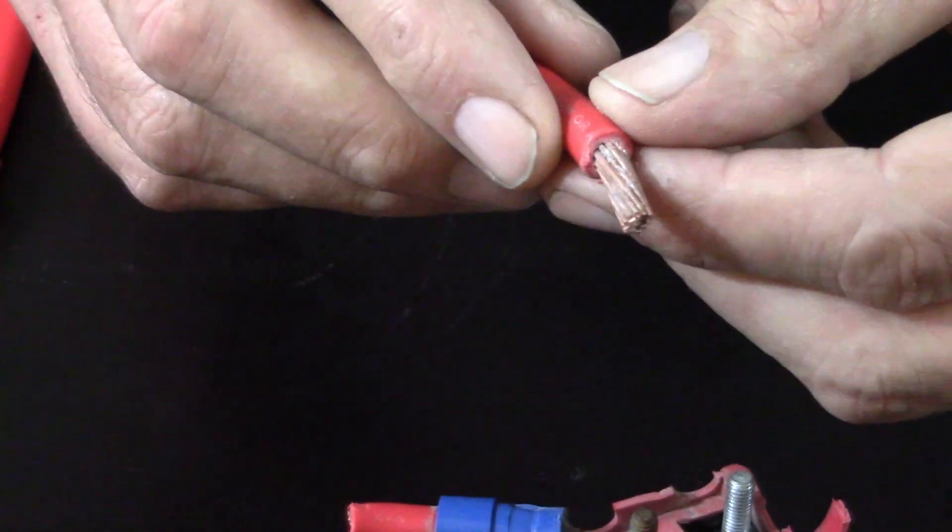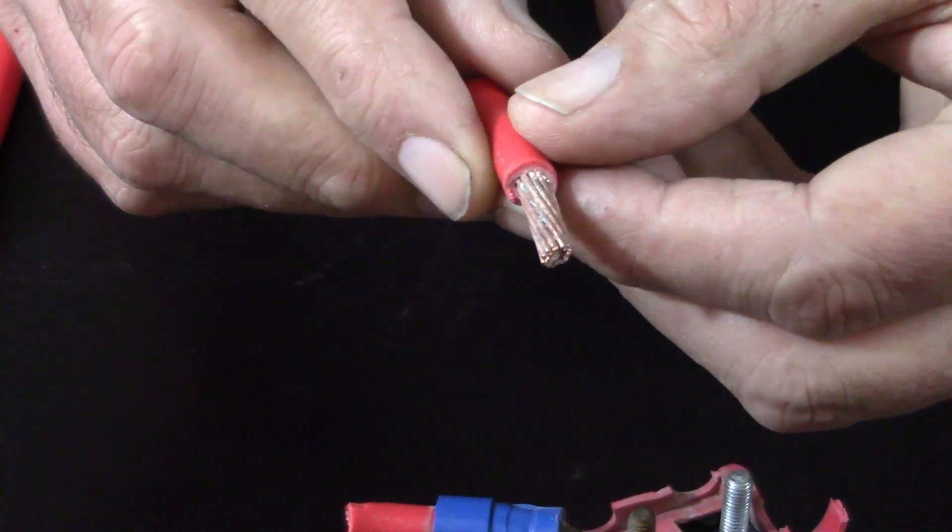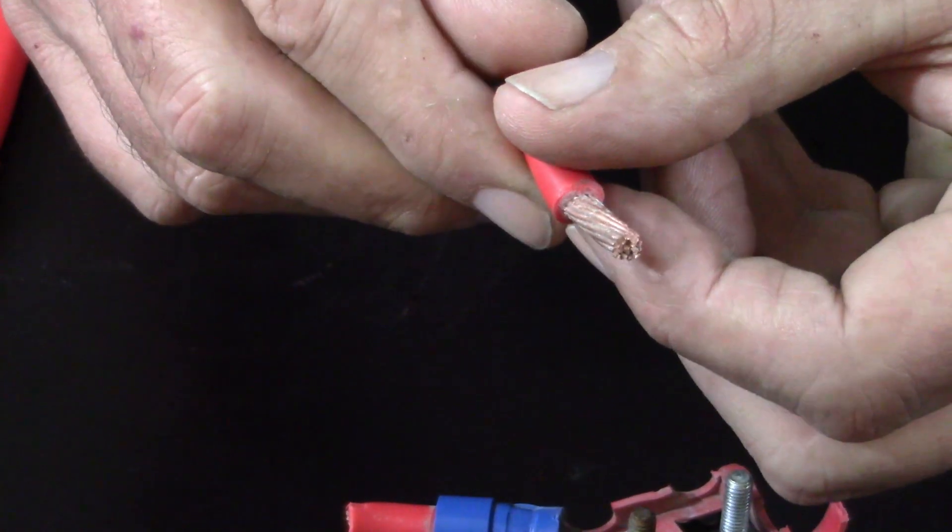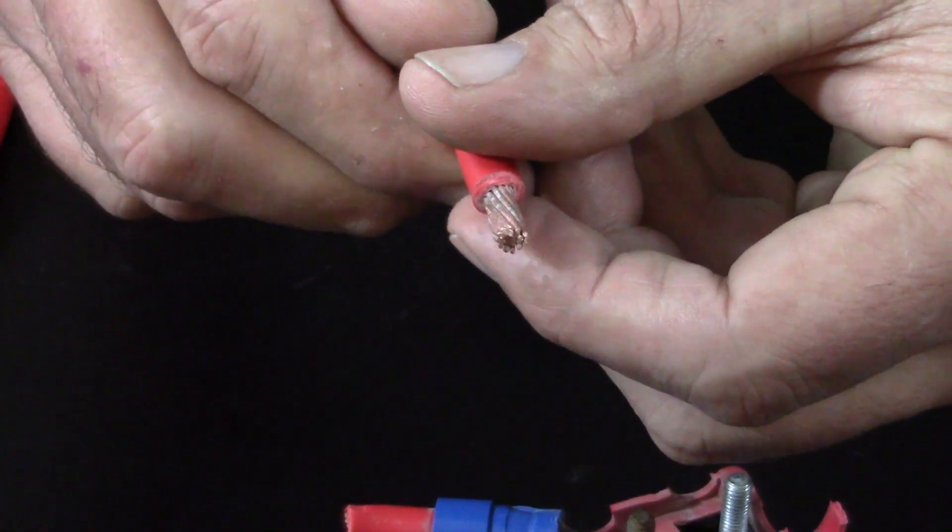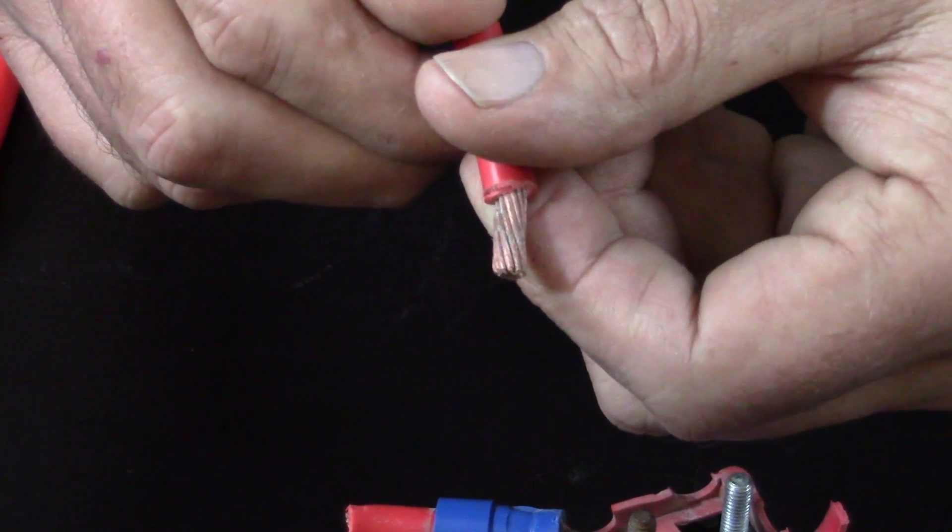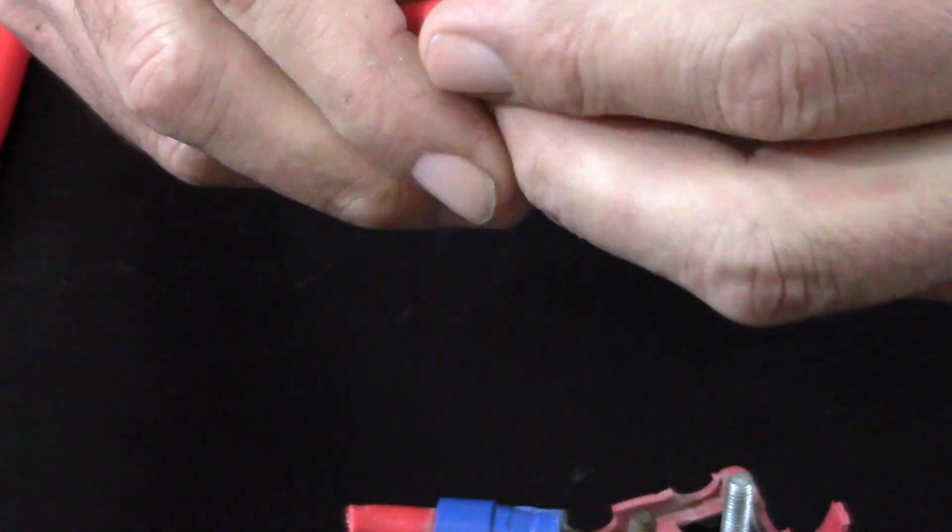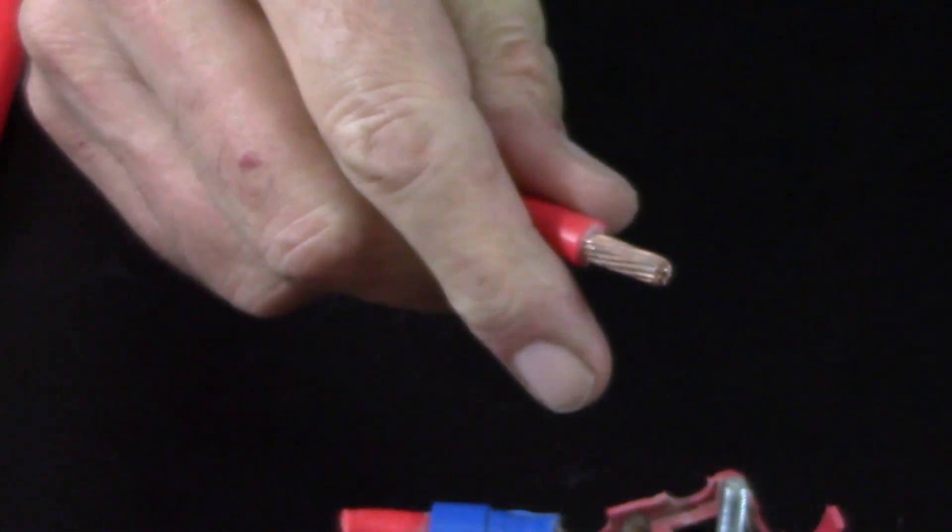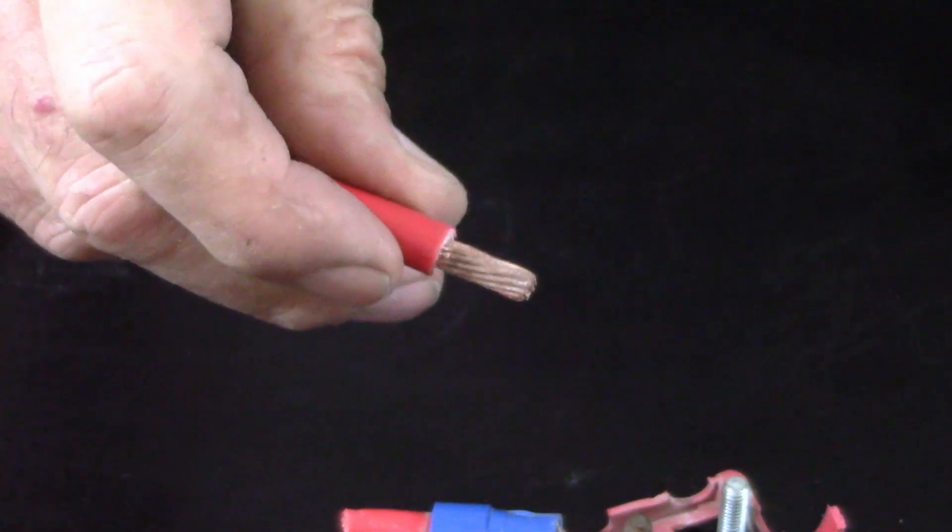I cut the terminal off. I was actually going to reuse the wire. I actually didn't see any corrosion initially. And once I stripped the wire back, I could see the corrosion build up. So I went ahead and used another piece.